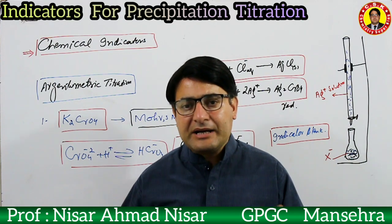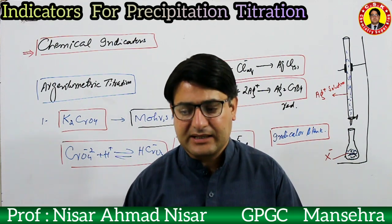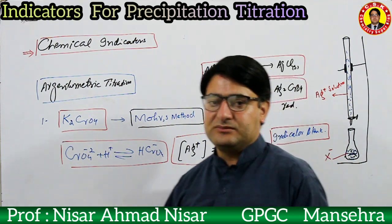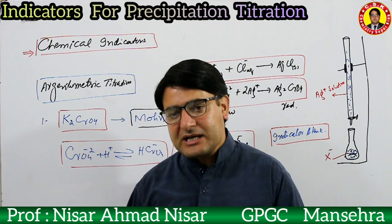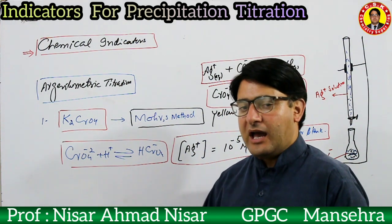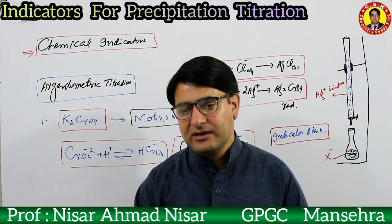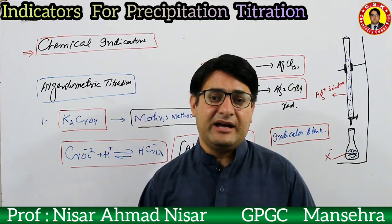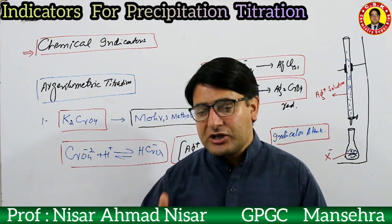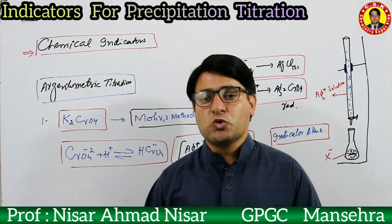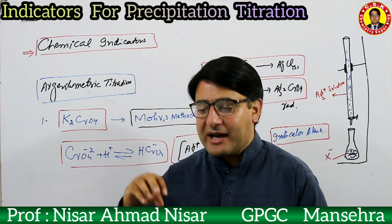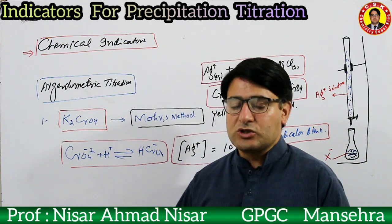Chemical indicators can be explained on the basis of argentometric titration. Argentometric titration is a titration in which halide ions are determined using a standard solution of silver ions. Such a titration is called an argentometric titration.